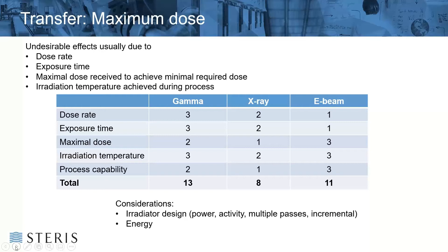This applies to x-ray, e-beam, and gamma — all three, not one or the other. Section 8.4 talks about transfers between modalities or between sources, and that's where some confusion starts. Parameters to consider that could affect the maximum dose include: dose rate, exposure time, total dose received, achievable dose range, and temperature effects on the product. The design of the irradiator, power, activity, number of passes past the ionizing source, and the energy level of the system can all potentially affect materials.